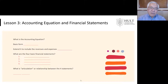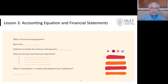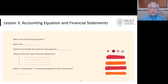Next lesson, number three, is the accounting equation and financial statements. So first is: what is the accounting equation? What is the form? How does it tie into revenue and expenses? What are those statements? And how do these all tie together? We'll cover these questions in this lesson, number three.